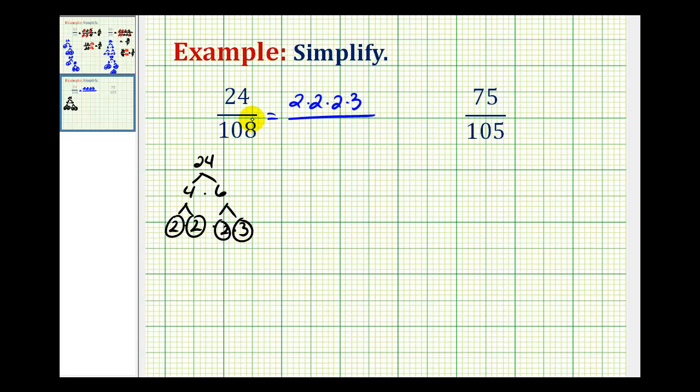And now we'll do the same for 108. It's even so let's start with two times 54. Two's prime. How about nine times six, three times three, and two times three. So we have two factors of two and three factors of three.